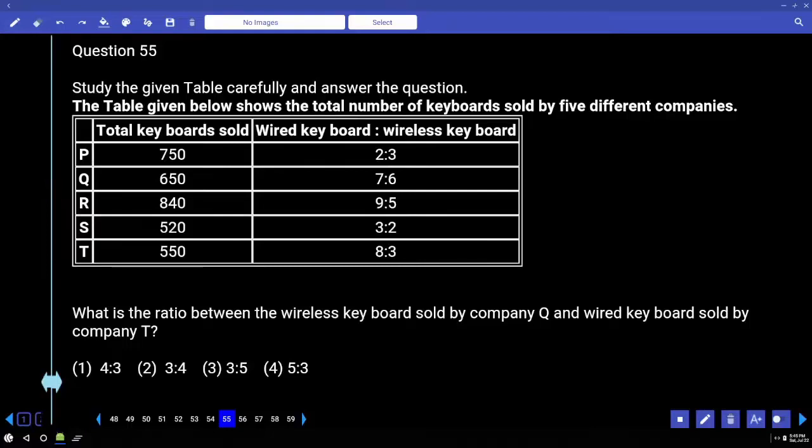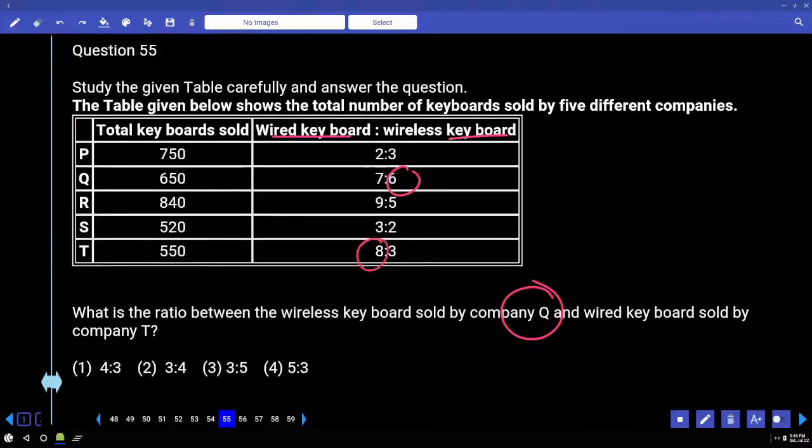Here the table given below shows the total number of keyboards sold by 5 different companies P, Q, R, S, T - wired keyboard, wireless keyboard. What is the ratio between the wireless keyboard sold by company Q? Wireless keyboard, 6 parts. Wireless keyboard sold by company T? Company T, 8 parts. So this is 6 parts out of 13 parts. Each part is 50. So 6 parts is 300. 11 parts 550. Each part 50. 8 parts 400. Ratio is 3 is to 4.